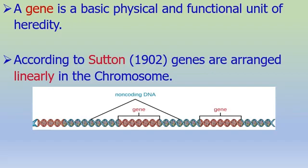Chromosomes are found in the nucleus of the cell. Many genes are present in a single chromosome, but they are not scattered — they are arranged linearly along the chromosome.